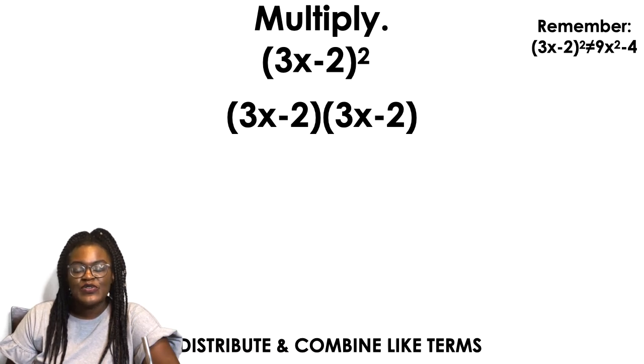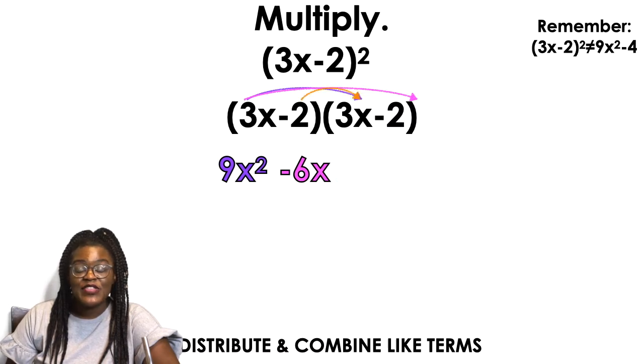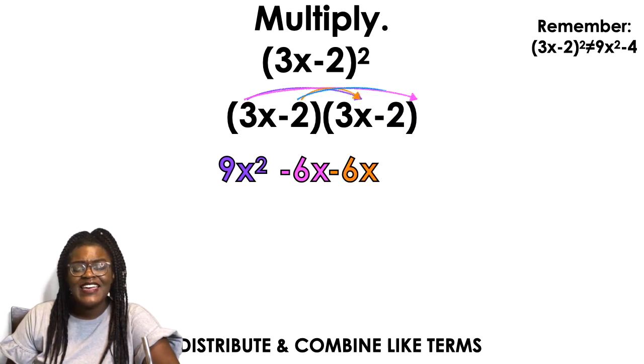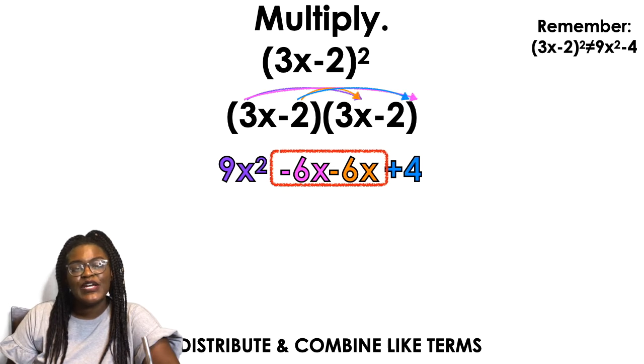In fact, 3x minus 2 squared equals 3x minus 2 times 3x minus 2, where you have to, guess what? Double distribute. 3x times 3x is 9x squared. 3x times negative 2 is negative 6x. Negative 2 times 3x is negative 6x. And negative 2 times negative 2 is positive 4. In the middle, guess what you're going to do? You're going to combine your like terms.